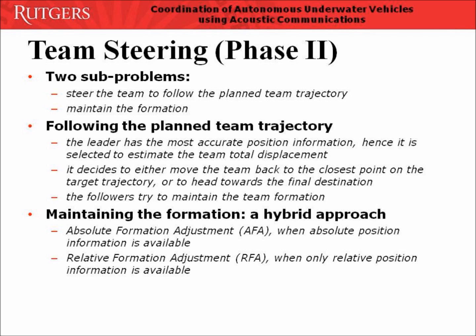Phase 2 team steering is divided into two sub-problems. The first sub-problem is to steer the team to follow the plan trajectory, and the second sub-problem is to maintain the formation. In our solution, the team leader is responsible for following the plan trajectory, while the followers are responsible for keeping the formation. We use a hybrid approach to keep the team formation, depending on whether the position information is absolute or relative. The relative position information is obtained by extracting double-shift information from ongoing opportunistic inter-glider communications. This hybrid approach reduces the communication overhead for position information.